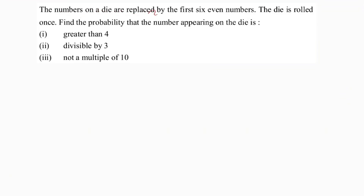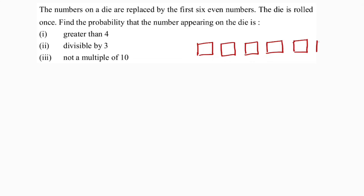The numbers on a die are replaced by the first six even numbers. The die is rolled once. Find the probability. On the die we normally get one, two, three, four, five, six, but here they are replaced with the first six even numbers, so we write two, four...